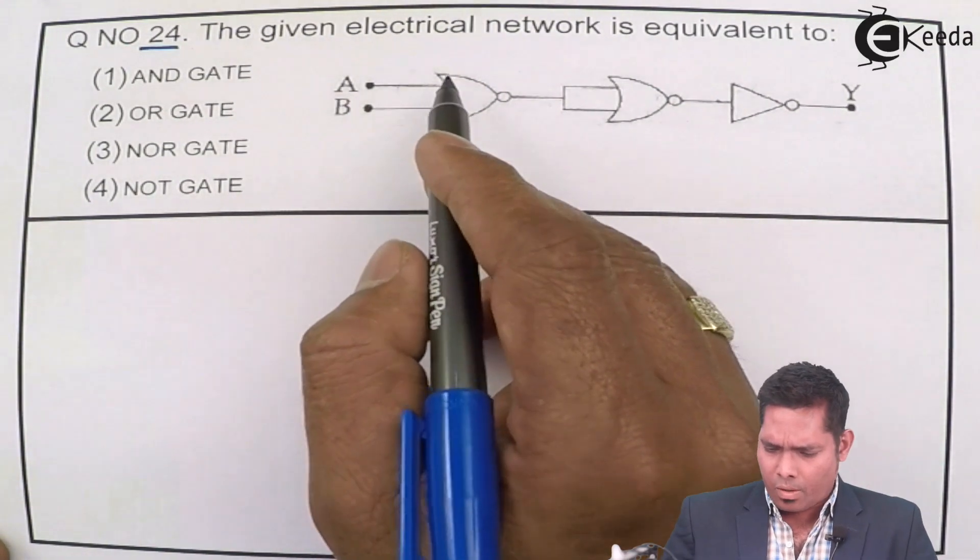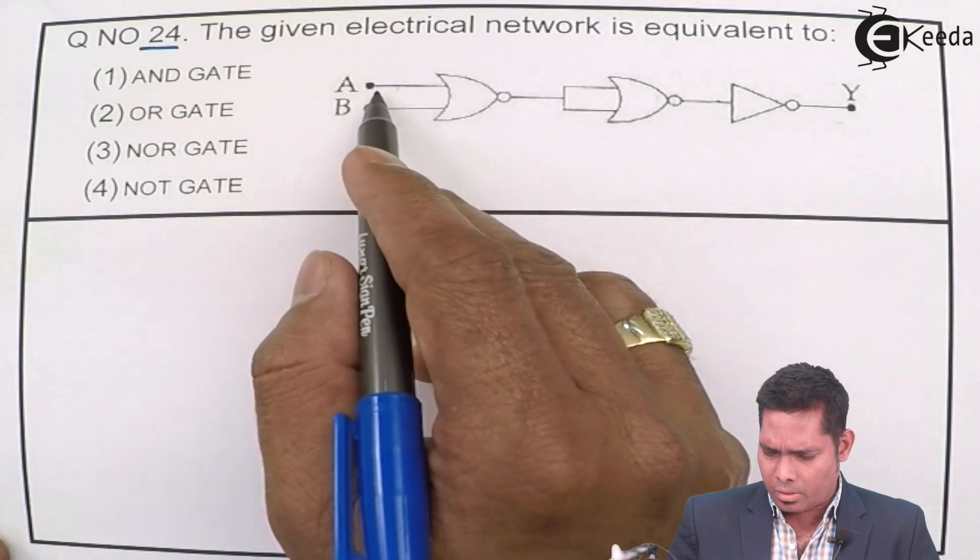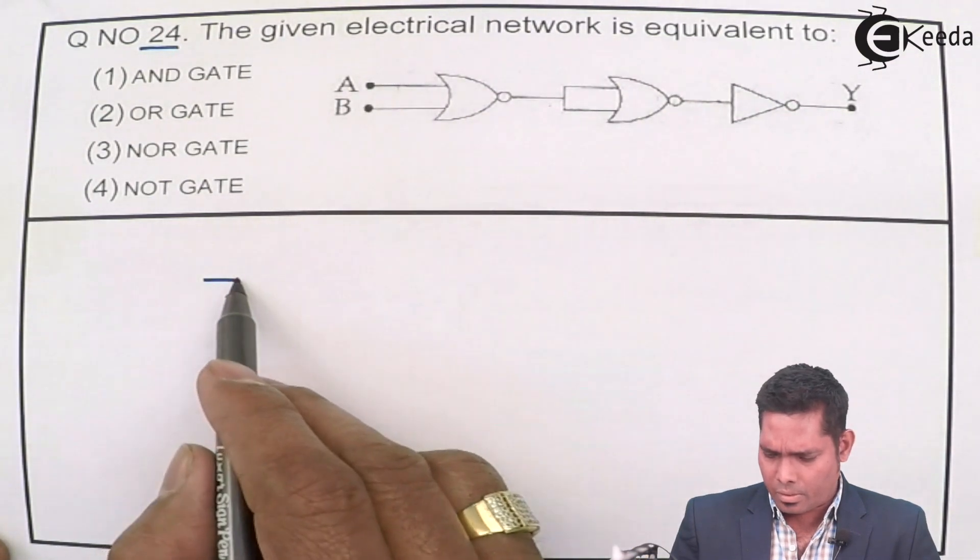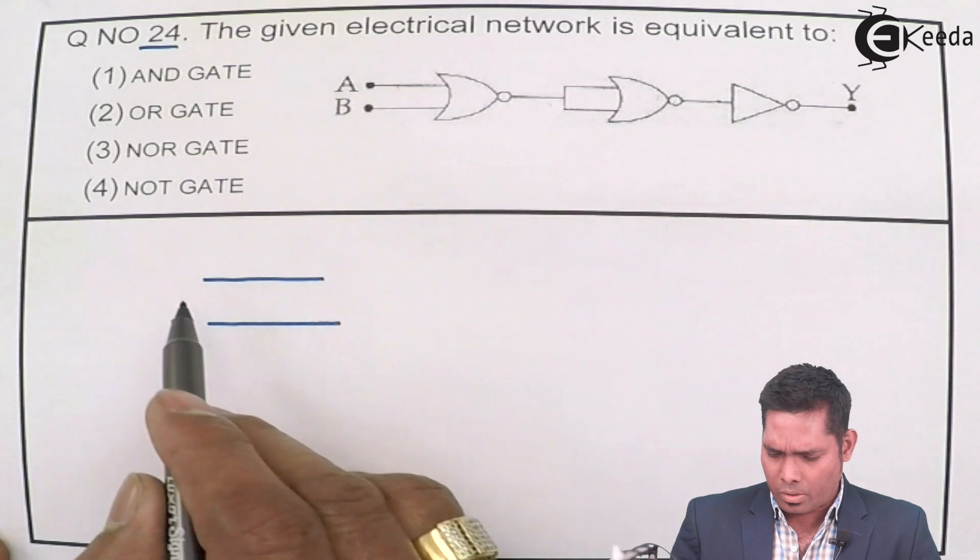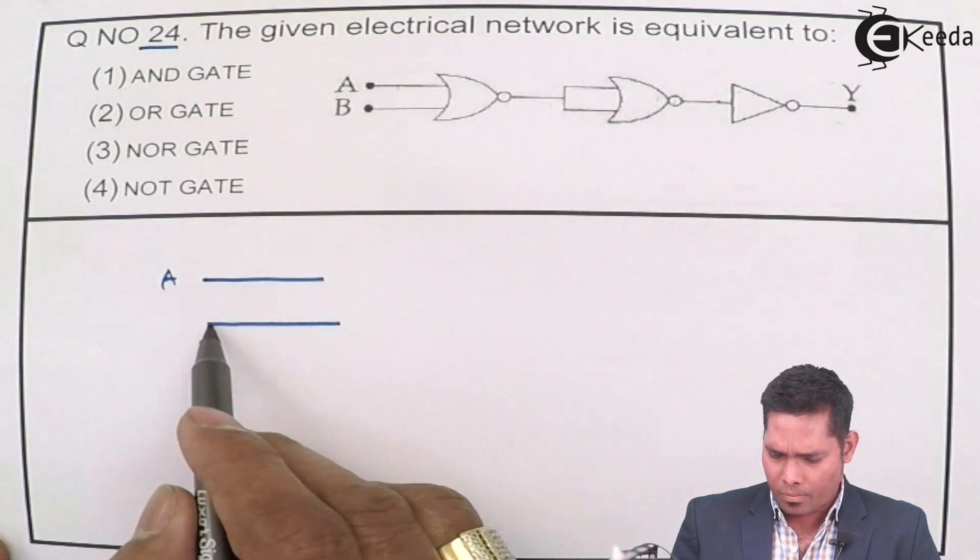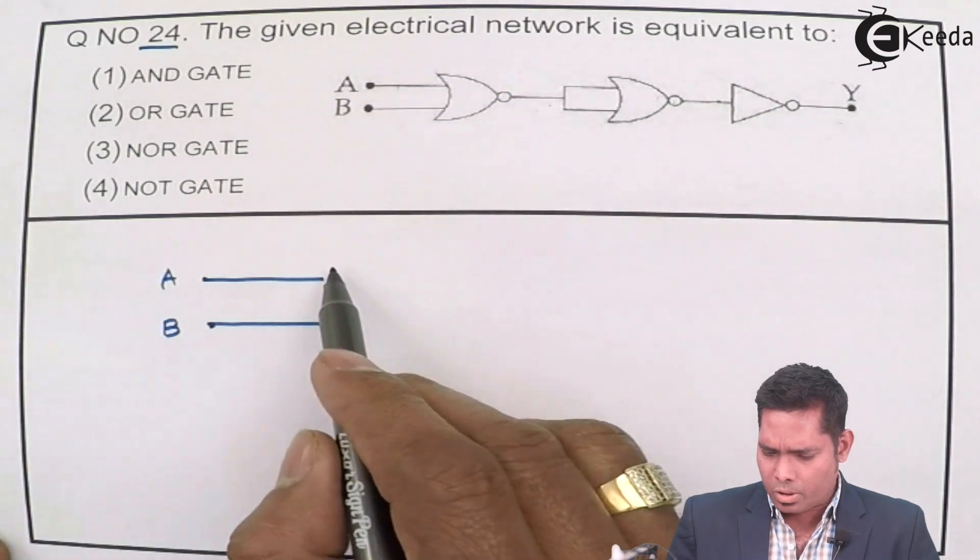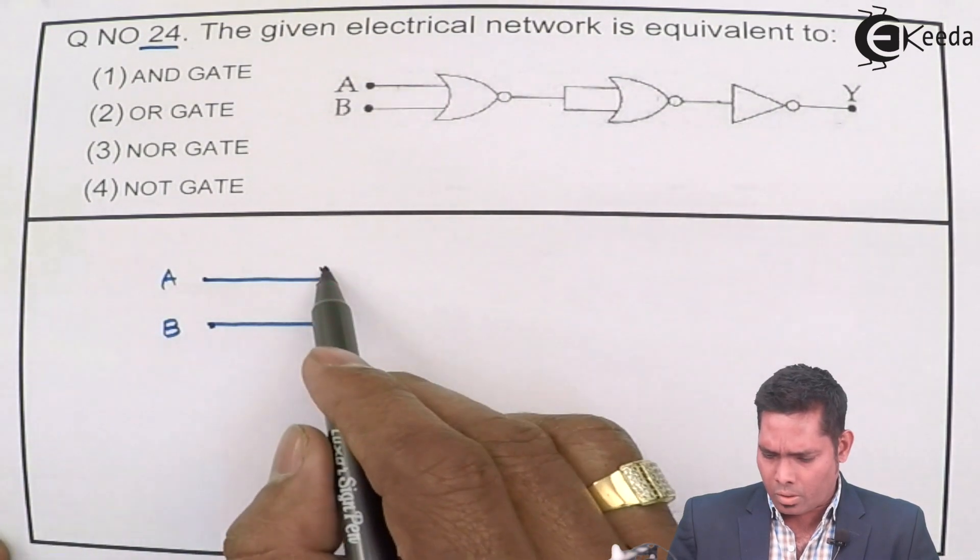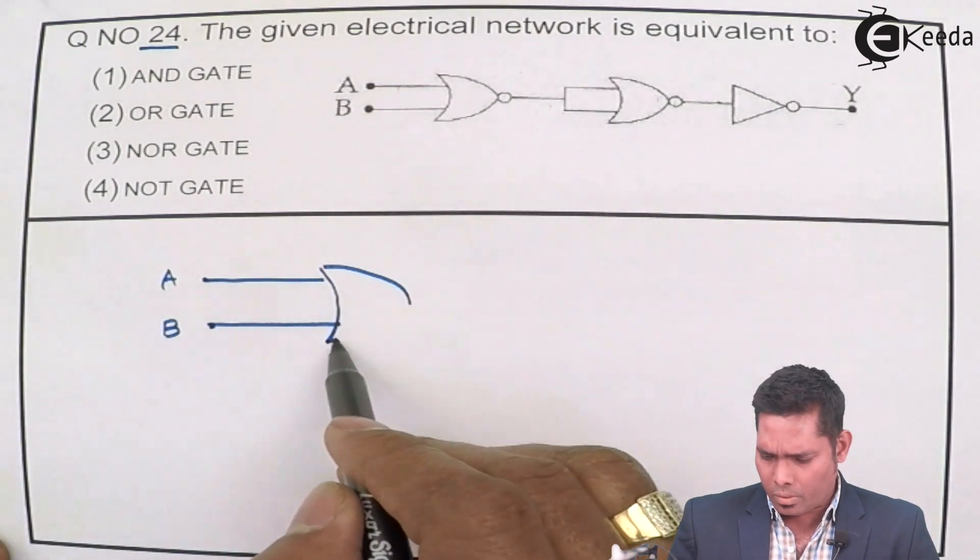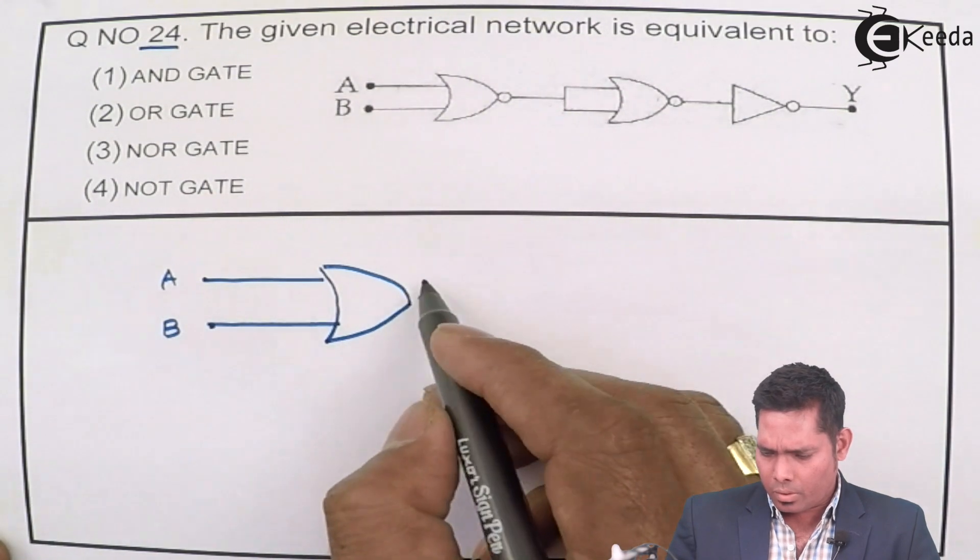Now, this one is the input that is given, the input A and B, the two inputs A and B, goes into this.